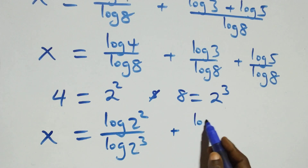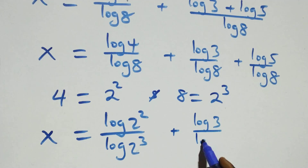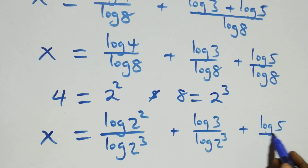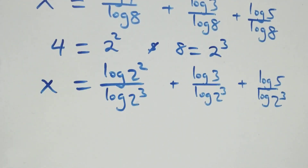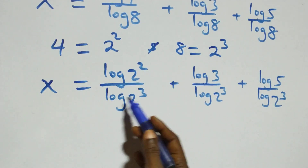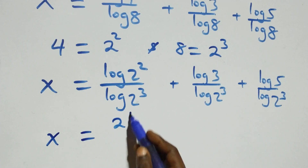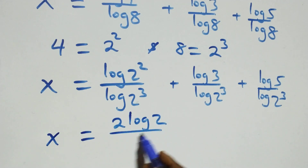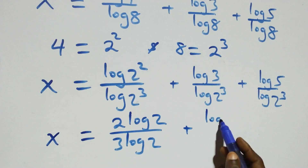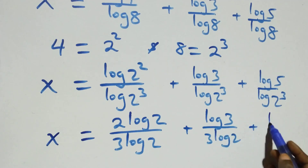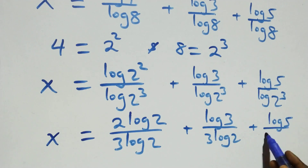We rewrite: log 4 over log 2 cubed plus log 5 over log 2 cubed. Applying the power rule of logarithms, 2 comes out here and 3 comes out here. We have x equals 2 log 2 over 3 log 2 plus log 3 over 3 log 2 plus log 5 over 3 log 2.